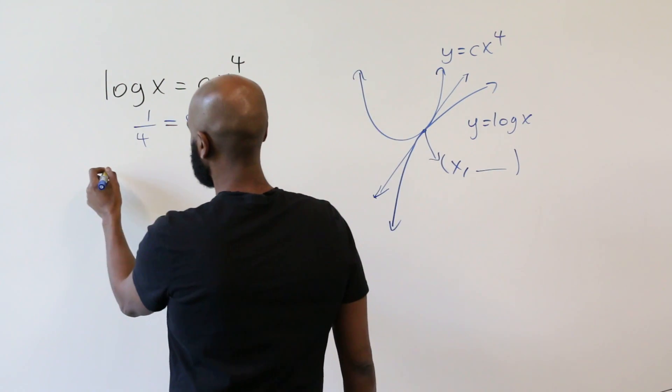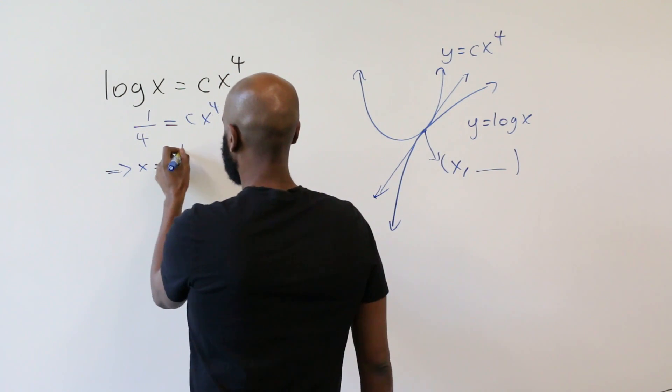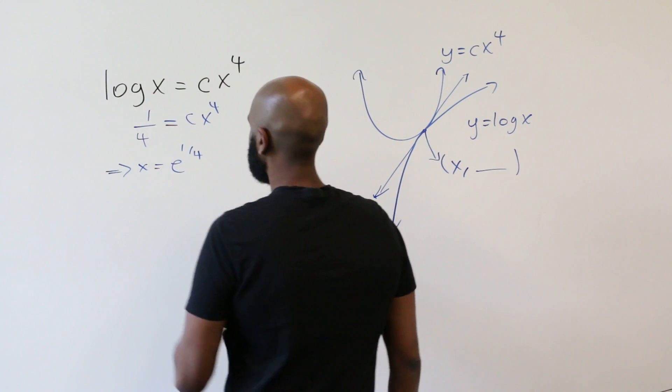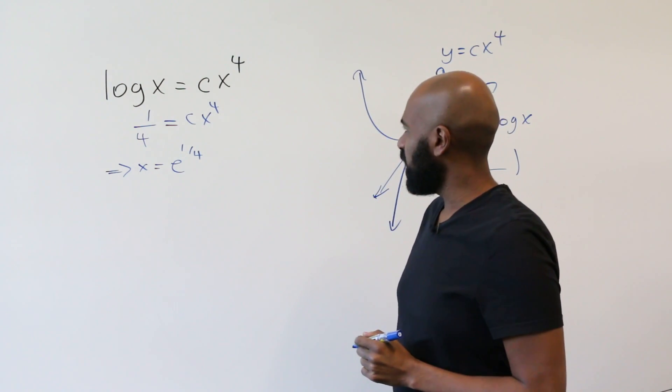If log x is a fourth, then that means that x is e to the fourth. And now we can use any one of these equations to figure out what c is.